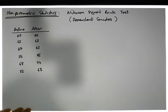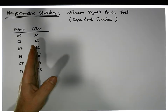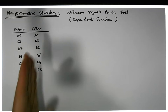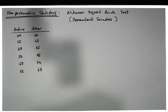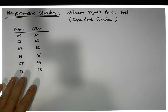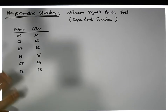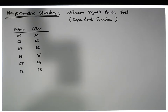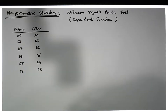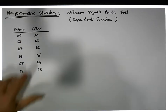We have a set of paired scores measured on each individual, and what we want to know is whether there is a difference between the before and after measures. In other words, is there evidence to suggest that the difference between before and after is different from zero? We're assuming that we're violating the assumptions of a paired or dependent samples t-test.